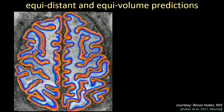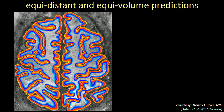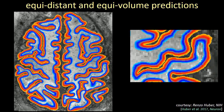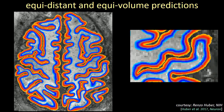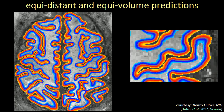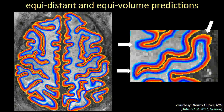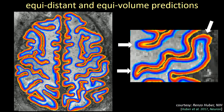A movie from Renzo Huber nicely shows the difference between equidistant and equivolume predictions, toggling back and forth. The two predictions differ most in regions where the cortex is very highly folded.